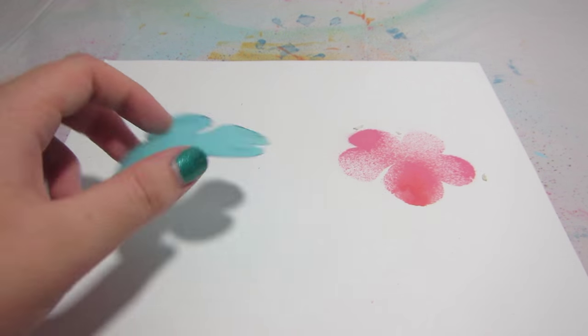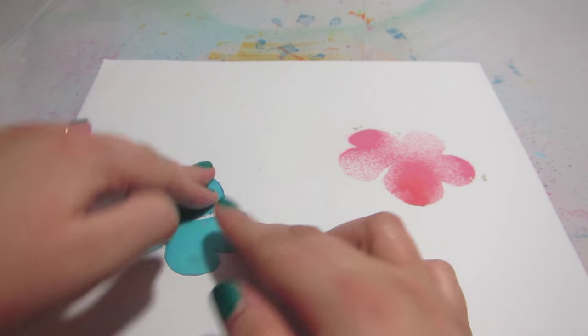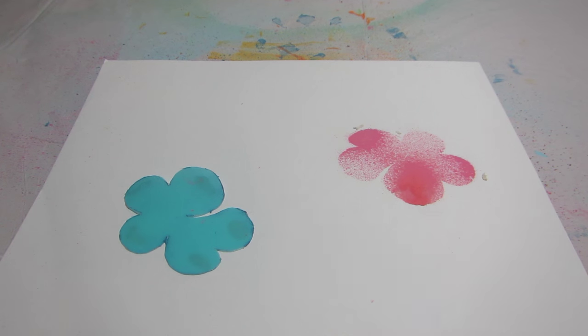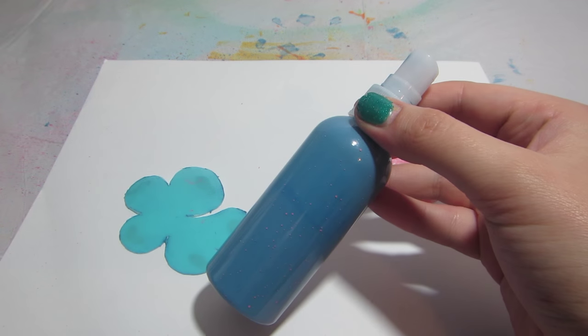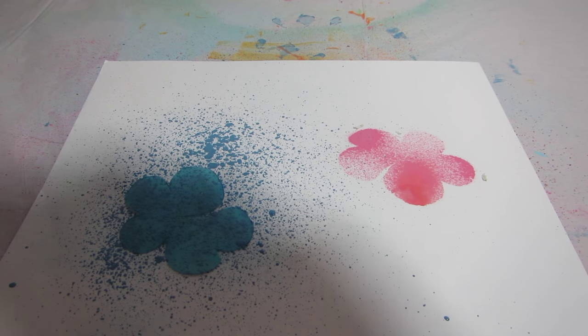The stencil I just used is considered a positive space stencil. You can also use the part you cut out as a negative space stencil. Using a negative space stencil is the same as using the positive space one, although there is no need for any tape or paper.